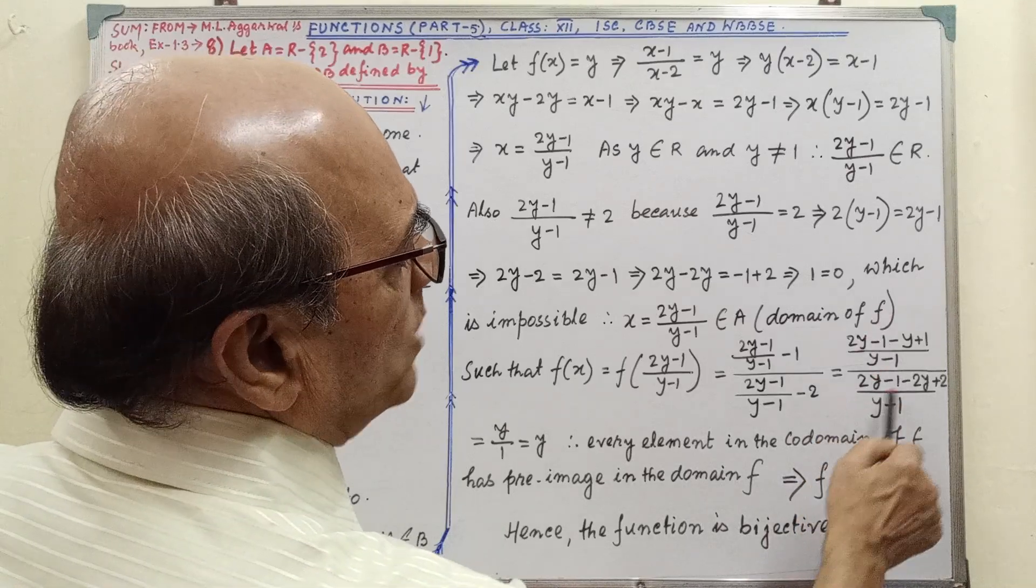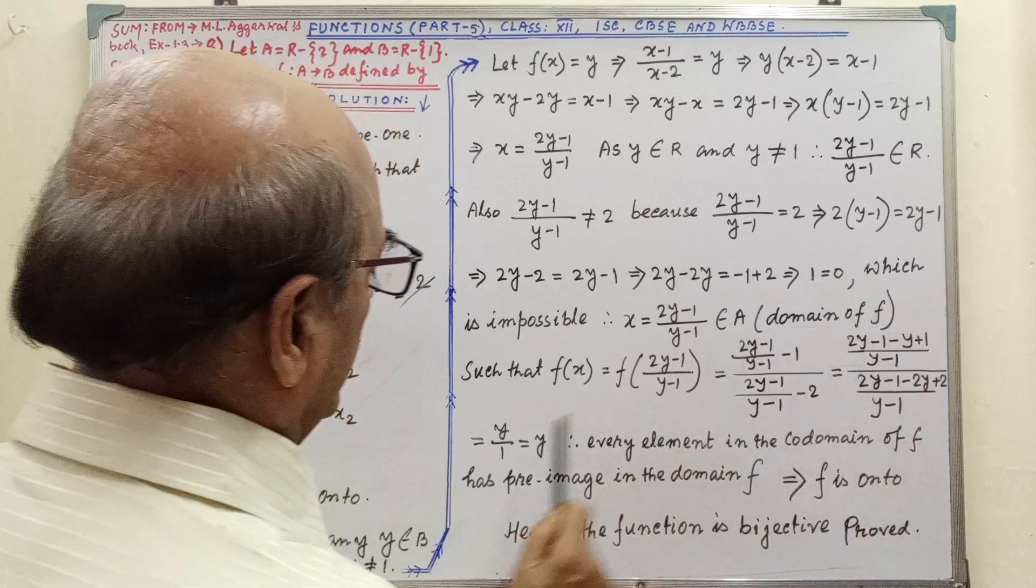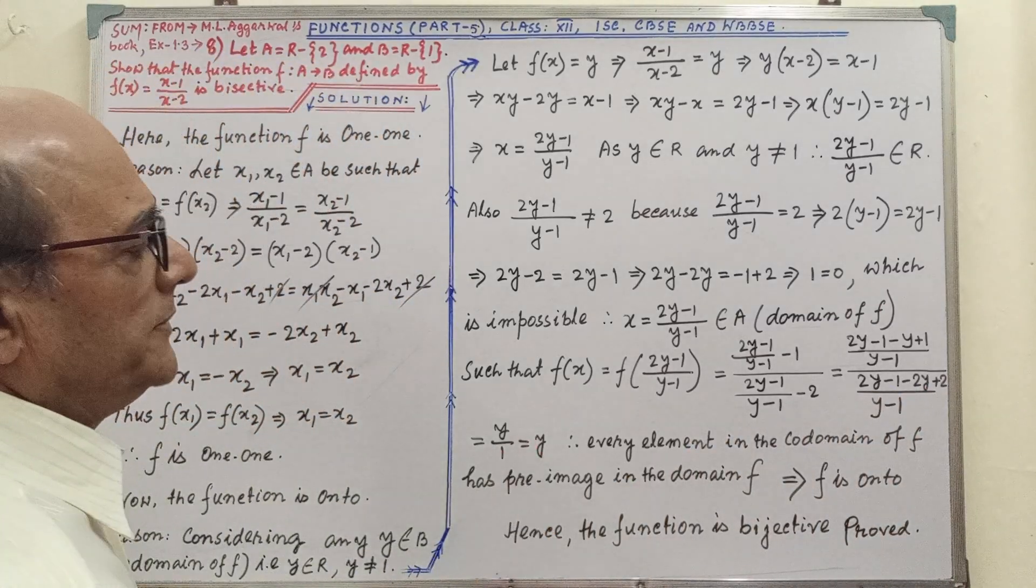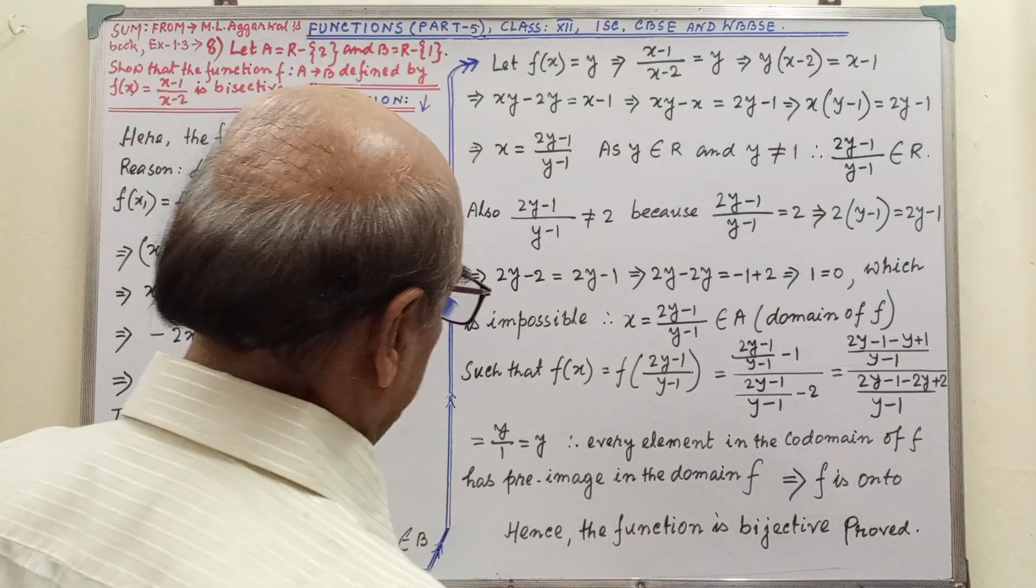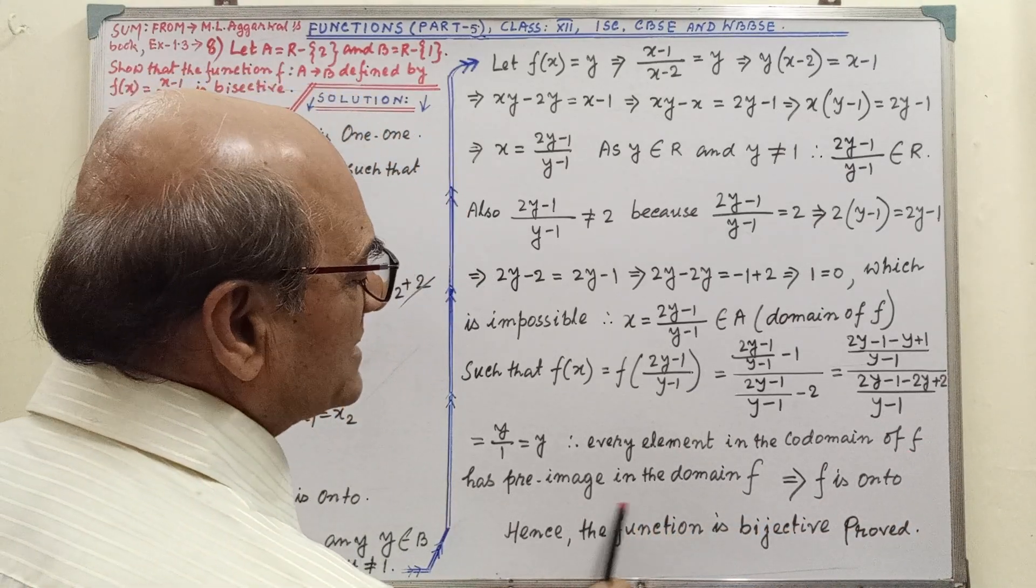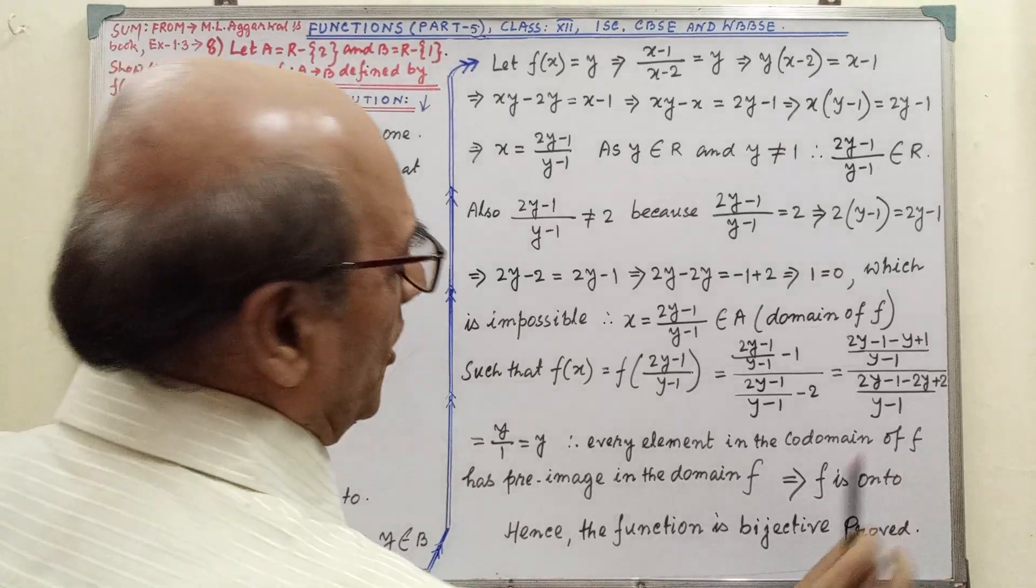and here plus 2Y minus 2Y will be cancelled, minus Y plus 2, that is 1, equal to Y. Therefore, every element in the codomain of F has pre-image in the domain F, therefore F is onto function.